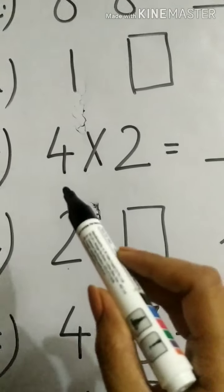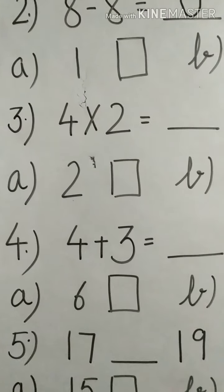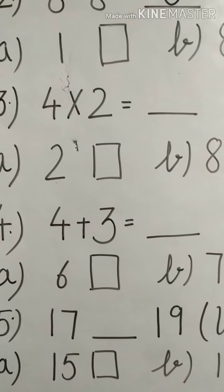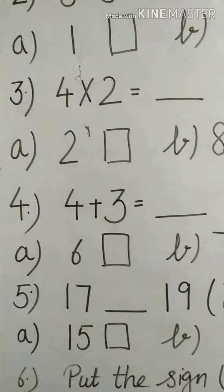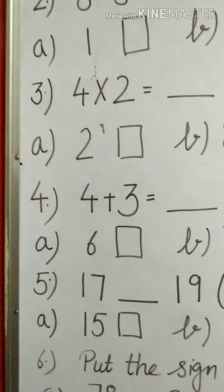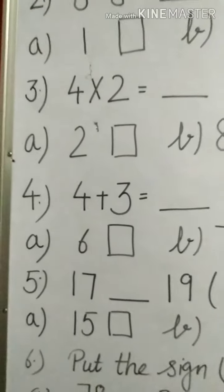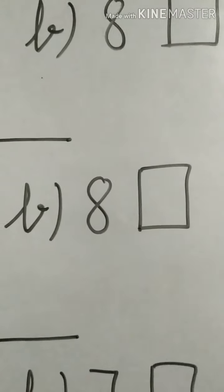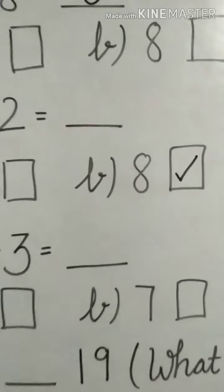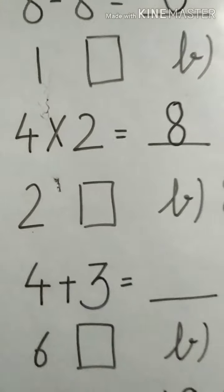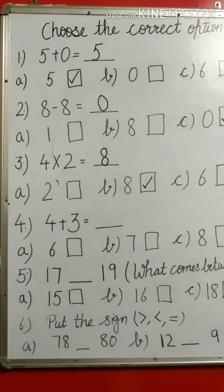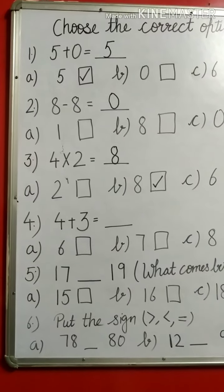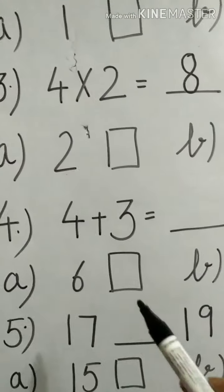Let's begin with the third question: 4 cross 2. That means I need to think 4 times 2. I can think of the table of 4 up to 2, or the table of 2 up to 4 — whatever is easier for you. 4 times 2 is 8. I am given options 2, 8, and 6. Since 8 is the correct answer, I will choose option B and write my answer there. In the third question, 4 cross 2 means 4 twos, and the answer is 8.